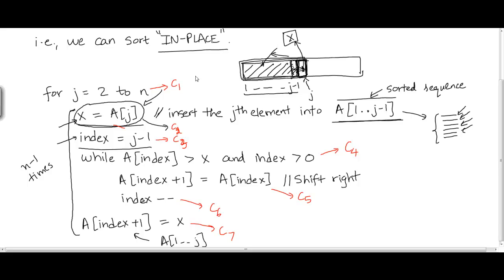Now, what is the total amount of time that will be taken to execute this algorithm? Notice that because all these instructions are present inside the body of the for loop, they're going to be executed over and over. In particular, because the for loop runs n-1 times, these statements are going to be executed n-1 times. So the amount of time it's going to take will be n-1 multiplied by the time it takes to run the body of the for loop, with c1 incorporated within this since the counter is incremented from 2 all the way up to n.